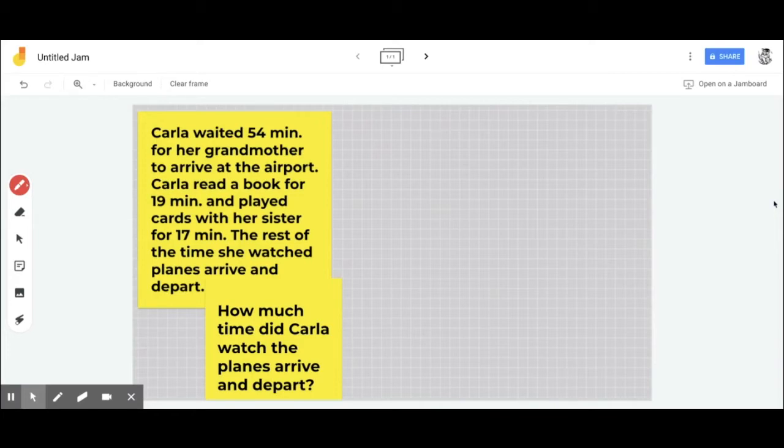Next, we want to circle our important information. This is usually our numbers. So we're going to circle 54 minutes, 19 minutes, and 17 minutes.